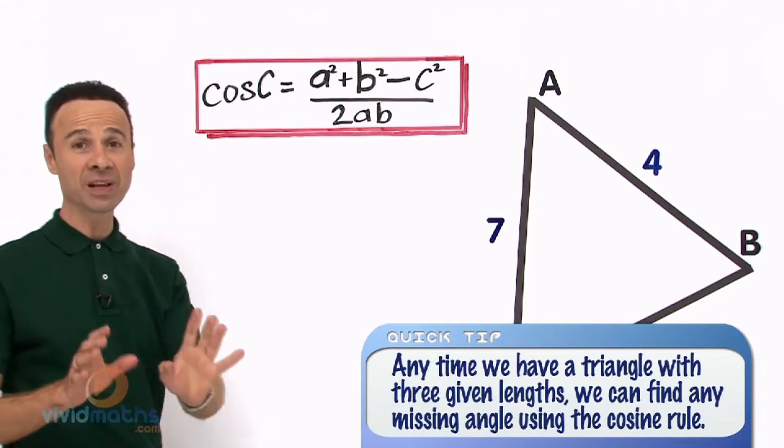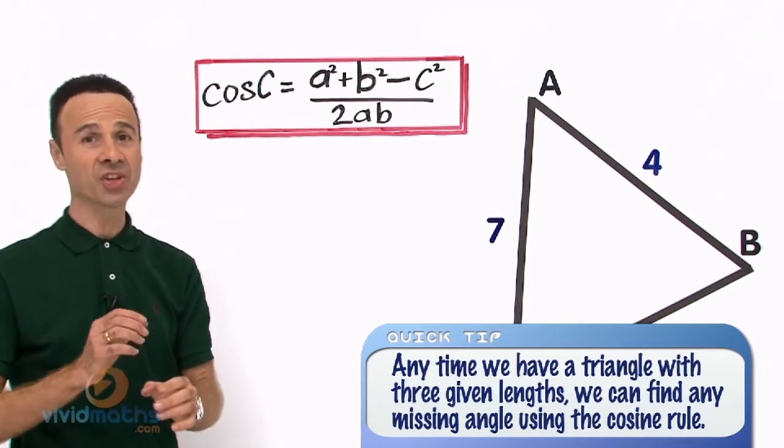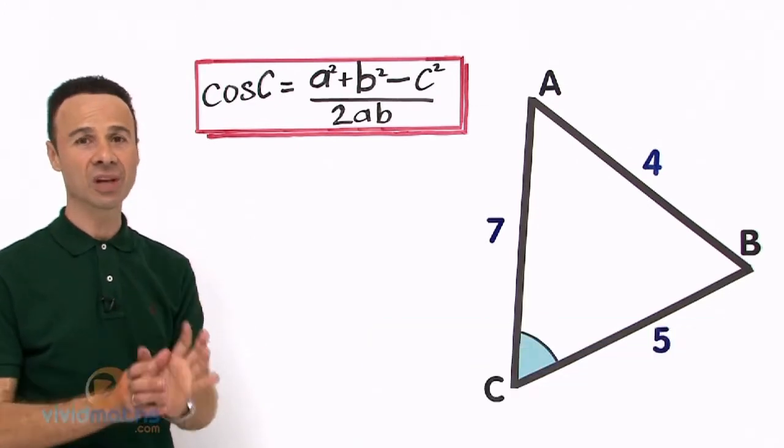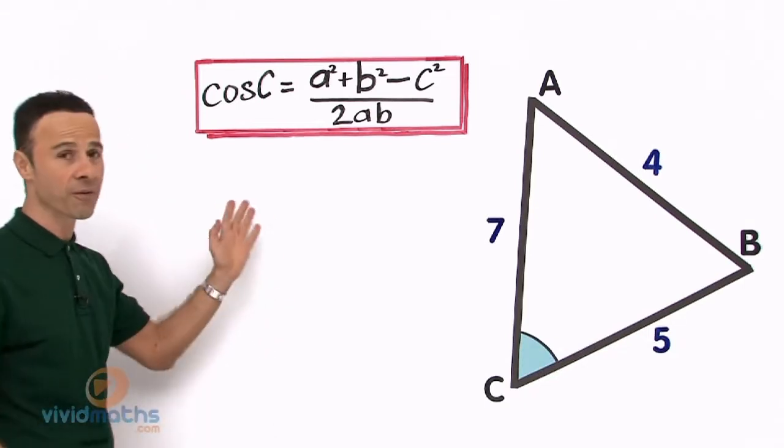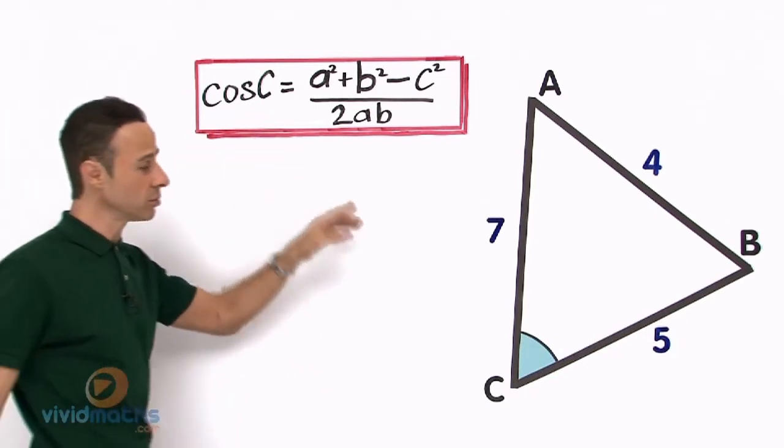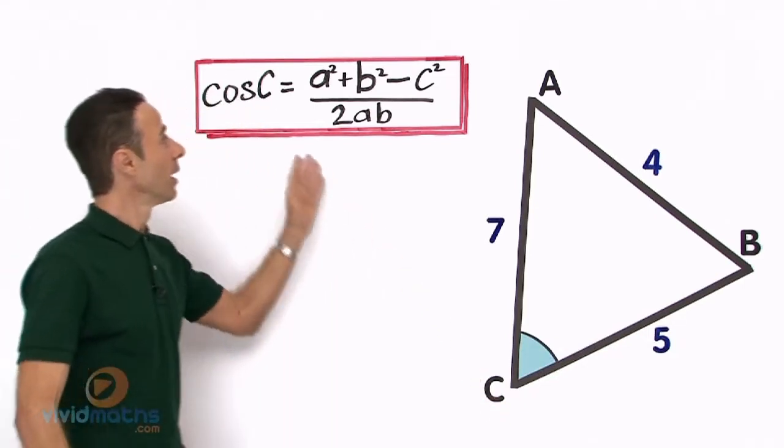At the formula, it is the same formula as before except the angle C is the subject on the left hand side. So we have cos C, the angle right over here that we are looking for, equals a² + b² - c² all over 2ab.